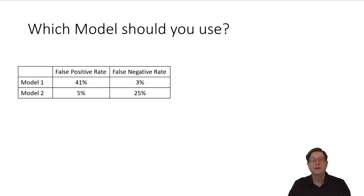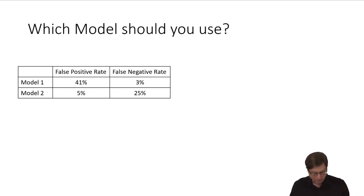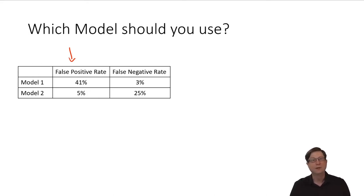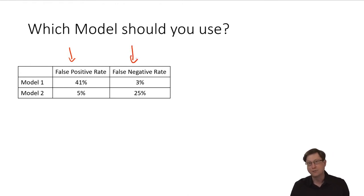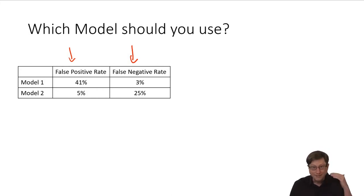Here's something you're going to bump into a lot as you're doing machine learning: you have multiple models and they make different types of mistakes. Remember, we talked in a previous lecture about a false positive rate — what fraction of the zeros does the model incorrectly classify as one — and the false negative rate, which is what fraction of ones does the model incorrectly classify as zero. If that's a surprise to you, go back and study more, because you need to know this.